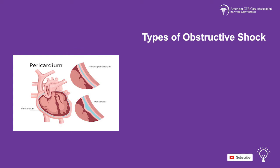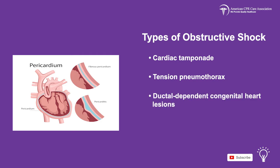There are four types of obstructive shock: cardiac tamponade, tension pneumothorax, ductal-dependent congenital heart lesions, and massive pulmonary embolism.